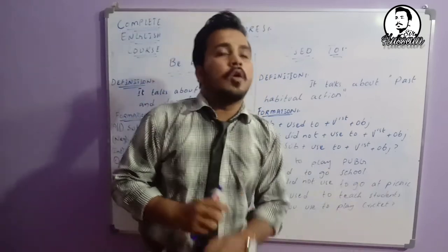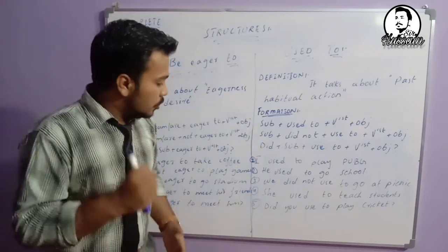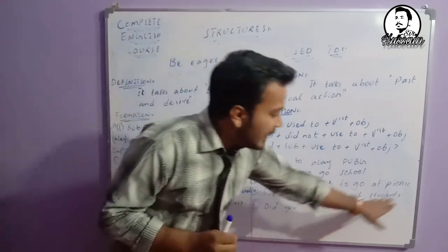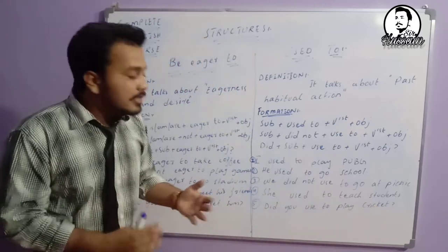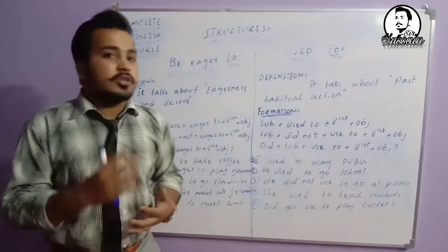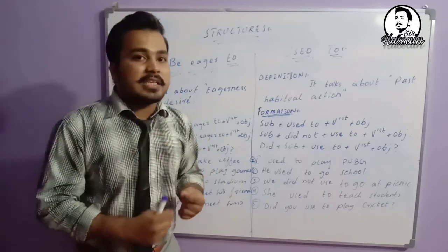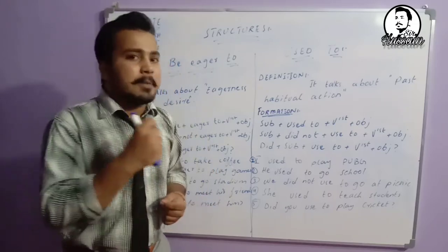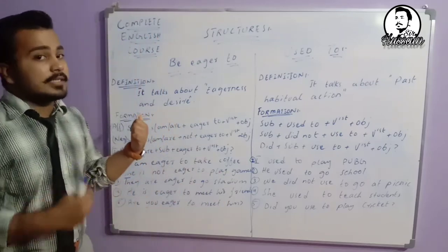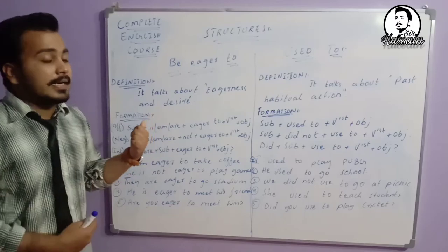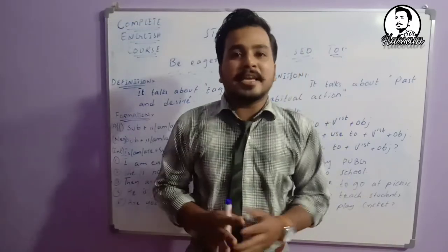More examples: 'She used to teach students' — woh students ko padaya karti thi. 'Did you used to play cricket?' — interrogative form. You can use these sentences in interrogative, negative, and positive forms. These structures will help you while writing and speaking, and especially 'used to' is one you'll use a lot.